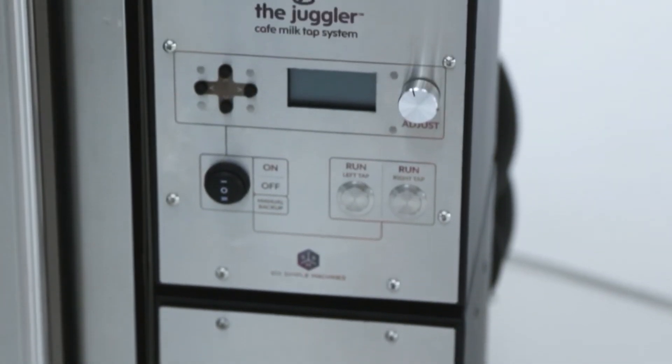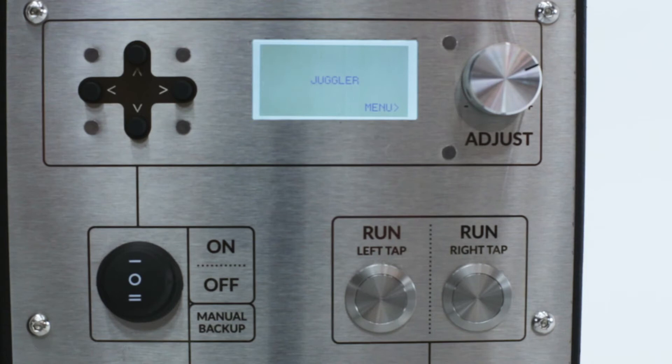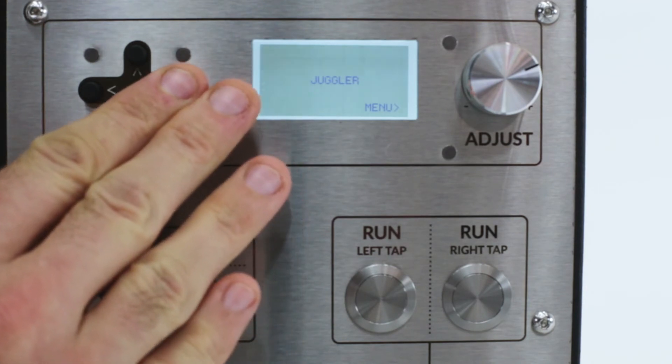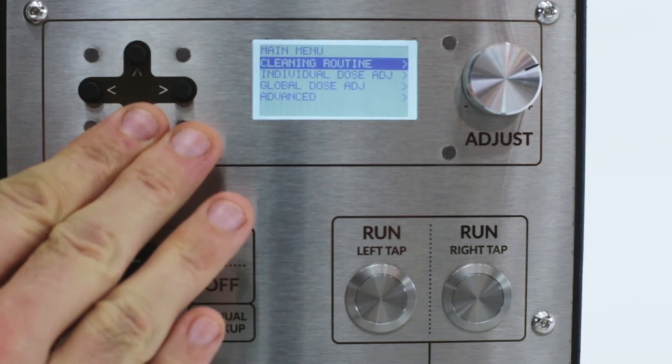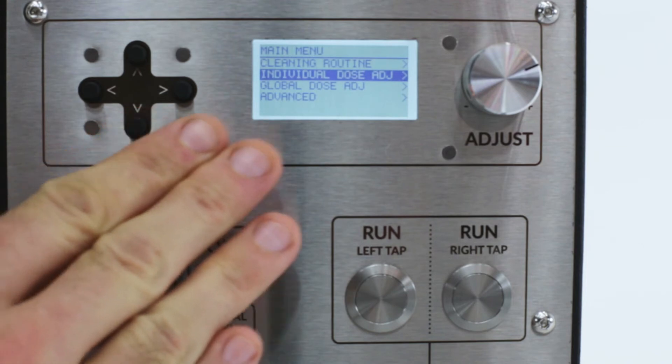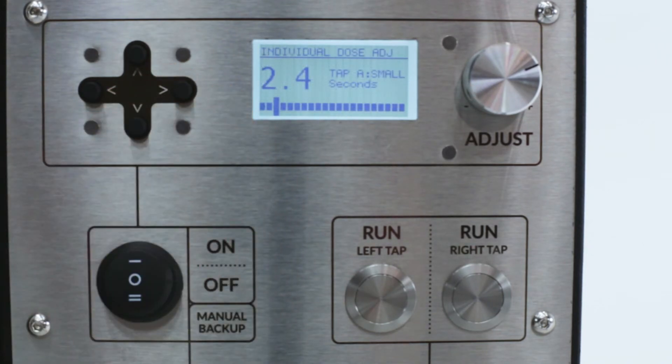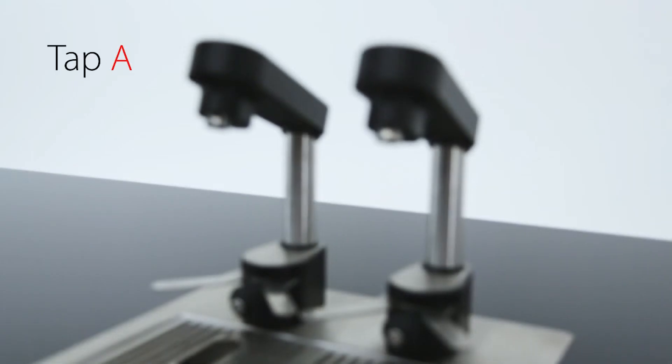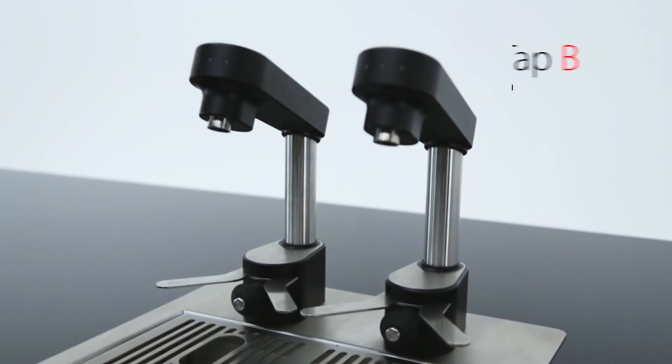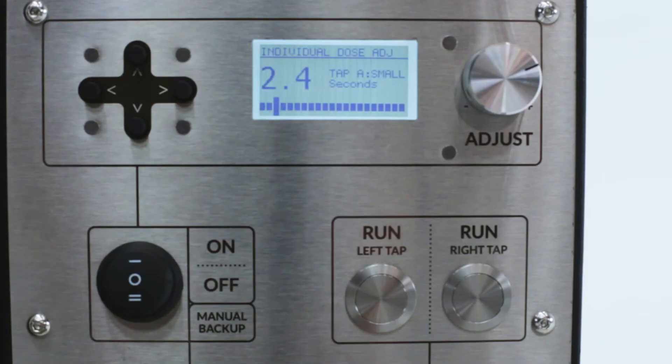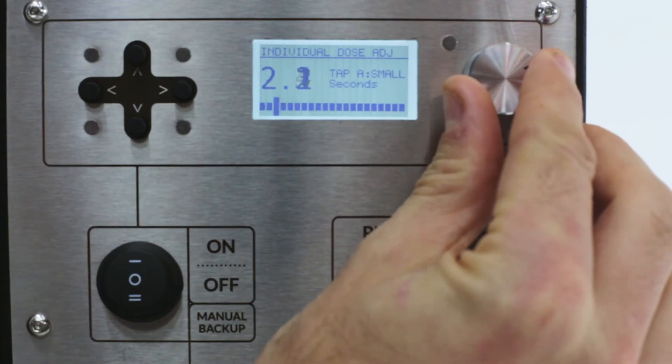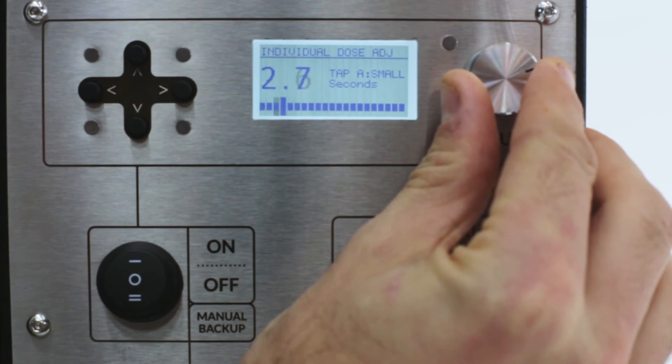The dose volumes can be adjusted through the Juggler controller. Press the right arrow to enter the menu. Press the down arrow to individual dose adjust and press right to enter the primary dose adjustment menu. You will notice that the first menu item is the small dose on tap A. Tap A is the left tap. Tap B is the right tap. Use the adjust dial to set the desired dose. The dose volume is displayed in seconds.